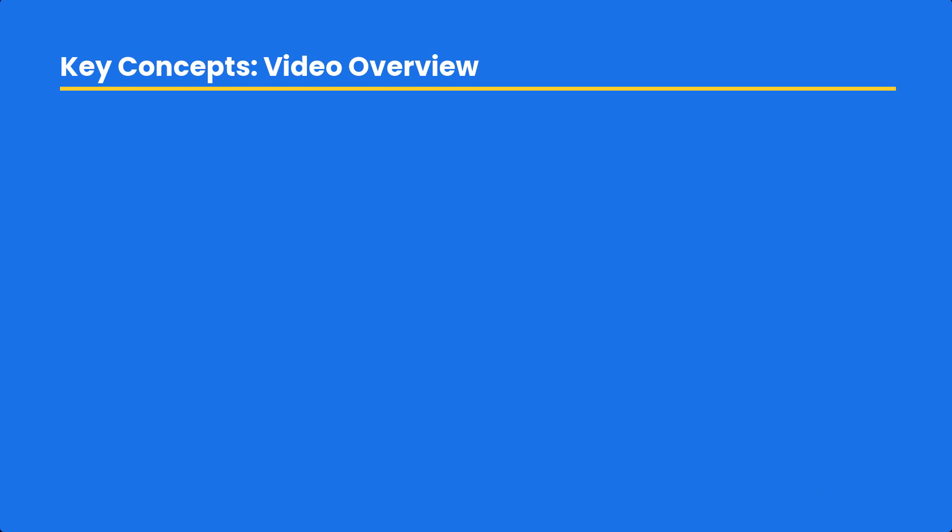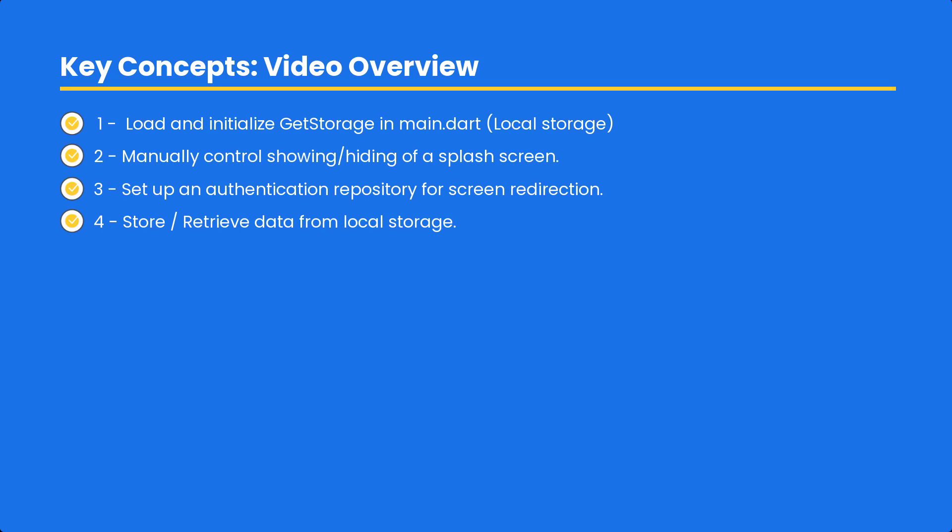The first thing is we are going to use local storage to perform this action because we want to store the local state inside our mobile device storage. For that we have two packages: the first one is the SharedPreferences package and the second one is the get_storage package. get_storage is not dependent on GetX state management, so even if you're using any other state management you can use either storage — they are almost similar.